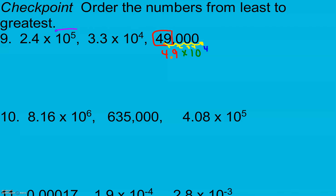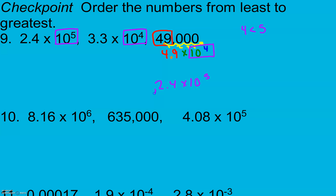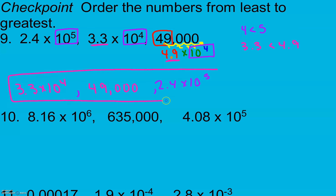Now I compare my exponential factors. 4 is less than 5, so I know my 10 to the 4th will be smaller than my 10 to the 5th, meaning 2.4 times 10 to the 5th is going to be the biggest. Then I compare my decimal parts: 3.3 is less than 4.9, which means 3.3 times 10 to the 4th is smaller than 4.9 times 10 to the 4th, which is actually 49,000. And there we go.